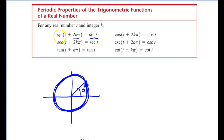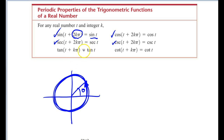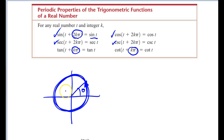Sine, cosine, secant, and cosecant all have a period of 2 pi — you can add or subtract as many multiples of 2 pi and it won't change anything. Tangent and cotangent, on the other hand, have a period of 1 pi. So when you're dealing with tangent and cotangent, you want to subtract multiples of 1 pi.